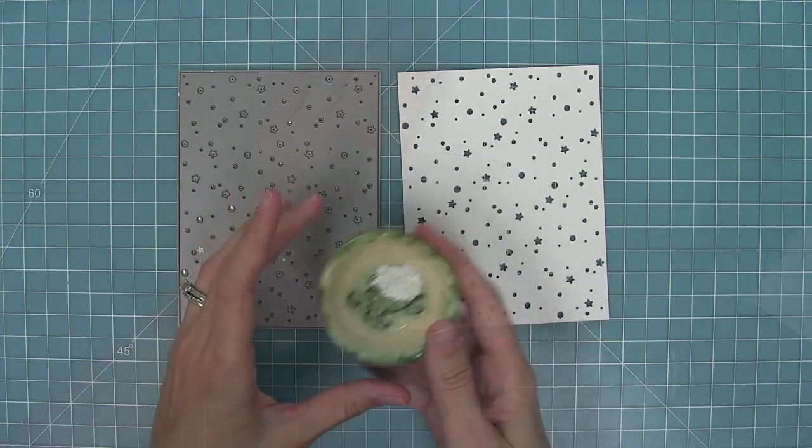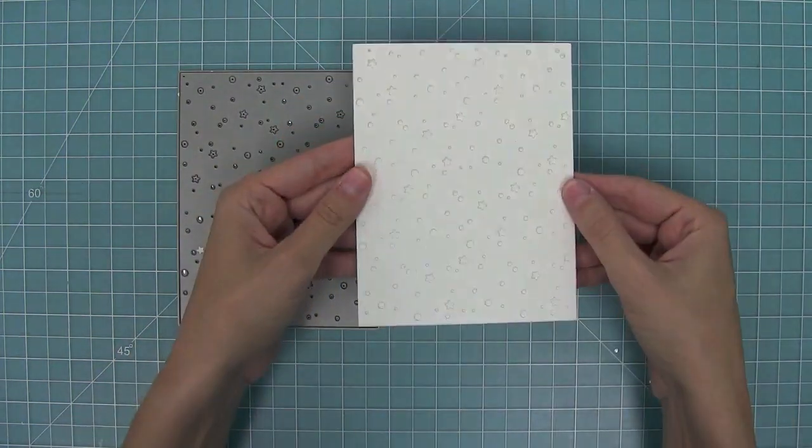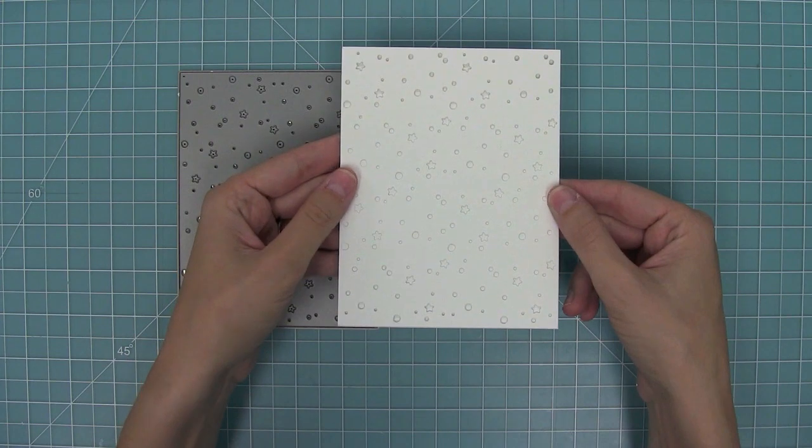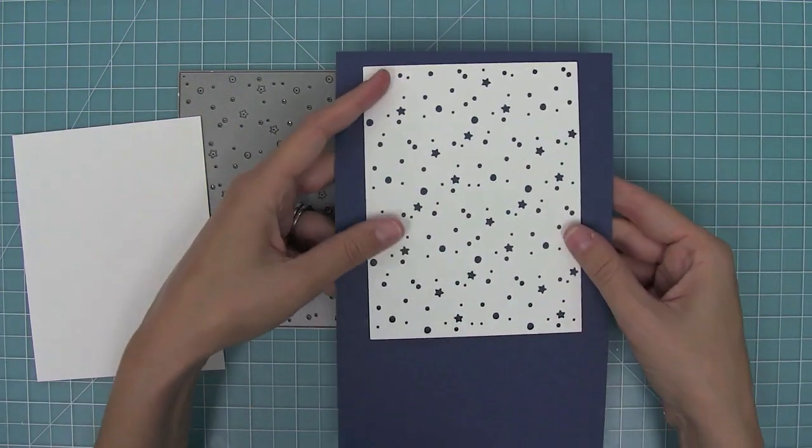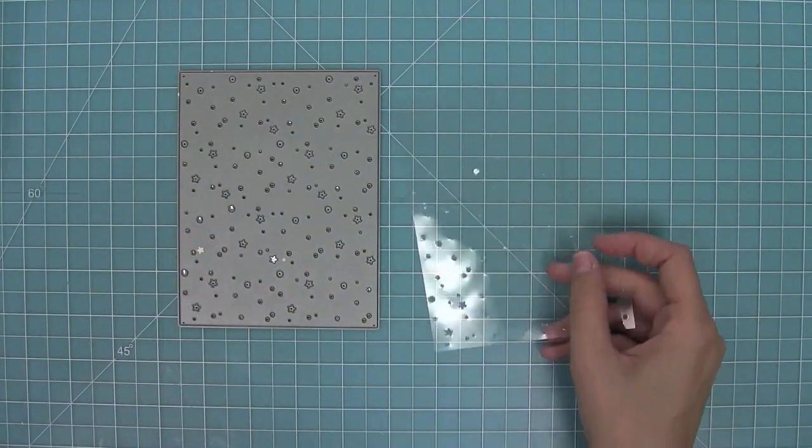You also get all these little pieces that are great to save for shaker cards. I love saving them. Here you can see how you can layer cardstock behind. This is white on white, here's white on blue, you could do blue on white - you can get creative with lots of cool colors.